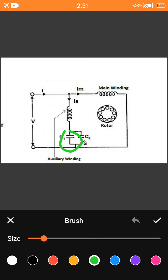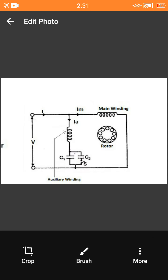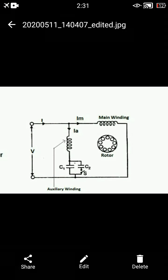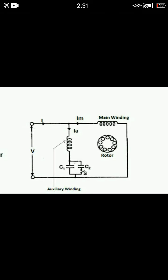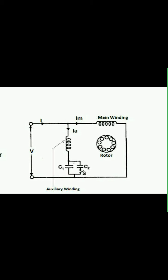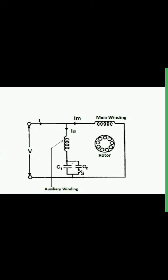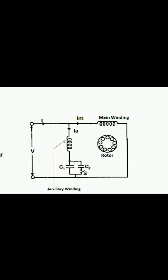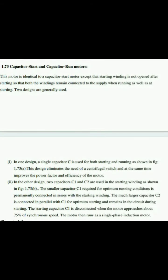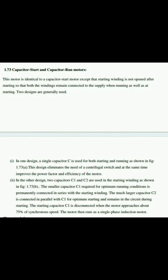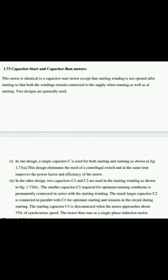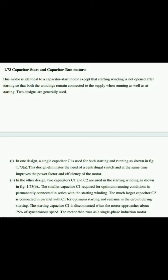That is why this motor is called the capacitor start and capacitor run induction motor. According to its construction, the stator is made up of silicon steel and the rotor is a squirrel cage rotor made up of copper bars, short-circuited with end rings. This motor is identical to the capacitor start motor except that the starting winding is not opened after starting, so both windings remain connected to the supply during running as well as starting.